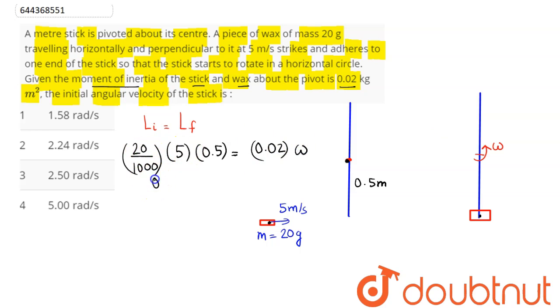So 0.05 divided by 0.02 equals omega. Angular velocity omega comes out to be 2.5 radians per second. That is option number 3, the correct answer.